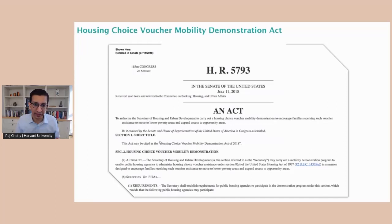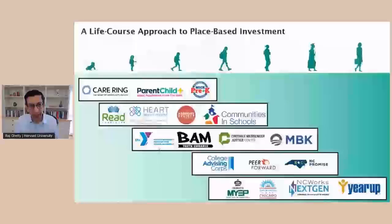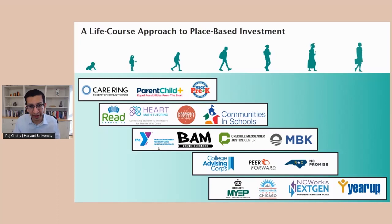That's one concrete illustration of how you can start from academic research to constructing data to a pilot on the ground to what I think will be a vastly scaled federal policy affecting thousands of kids' lives going forward. We're now doing analogous work — recognizing that the moving-to-opportunity approach is not fully scalable — trying to figure out how we can make place-based investments, looking at a variety of different programs from early childhood interventions to job training programs, using longitudinal data to understand which approaches are most successful in terms of bang for the buck in improving opportunity in a given area.